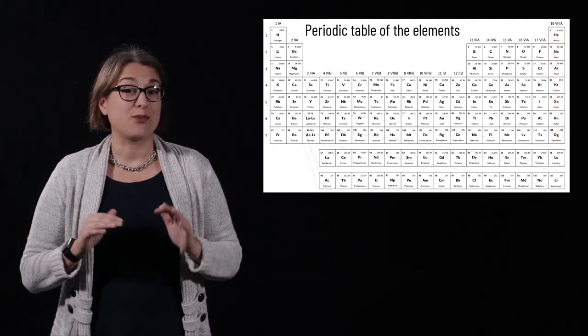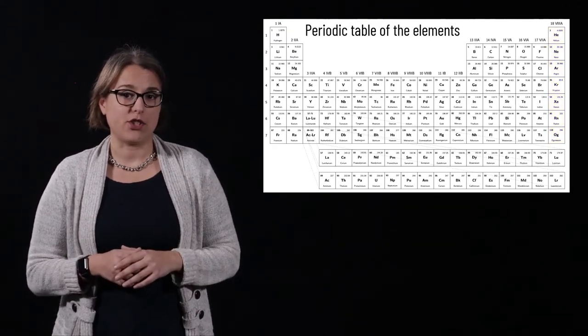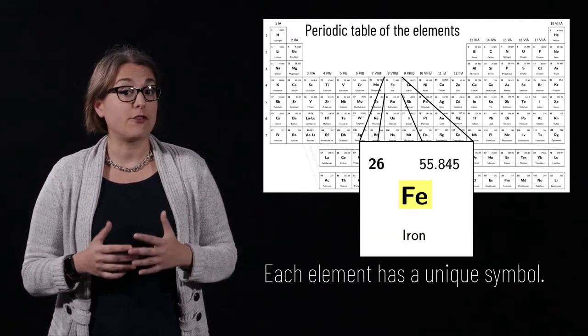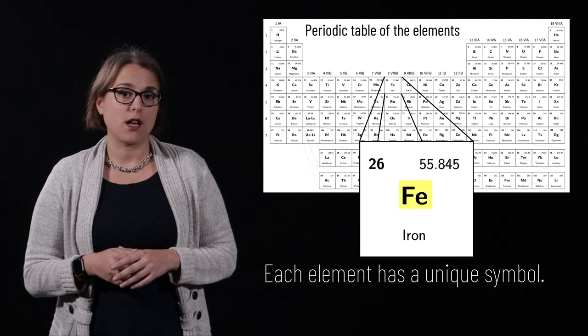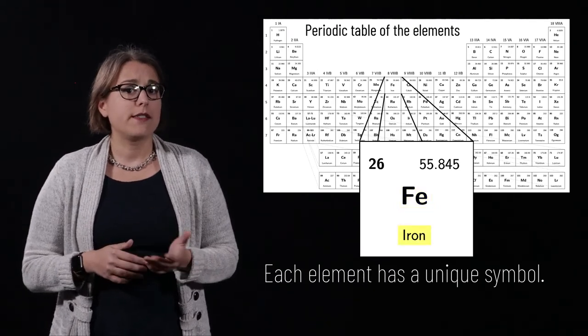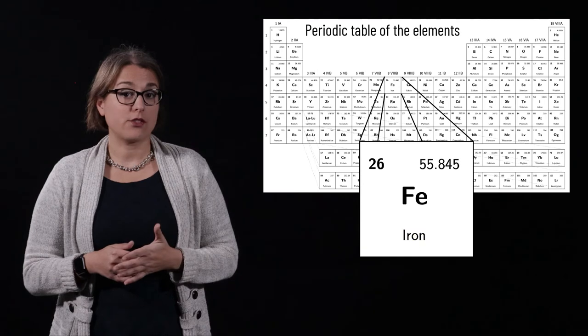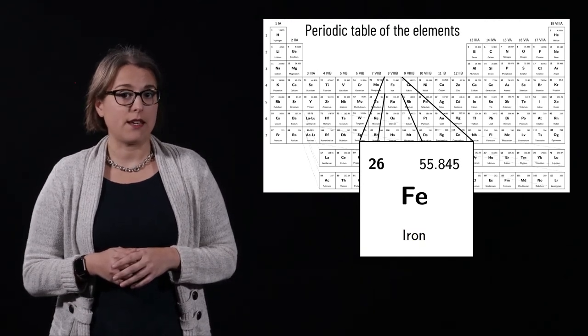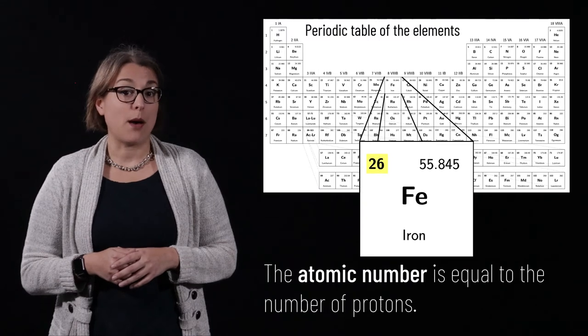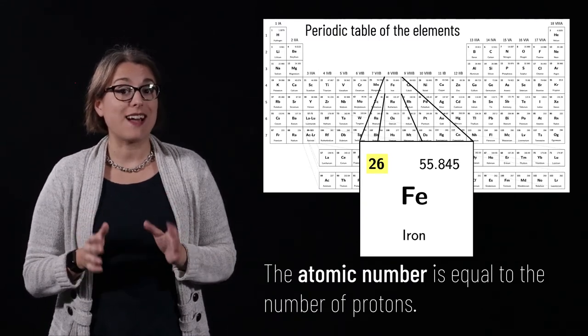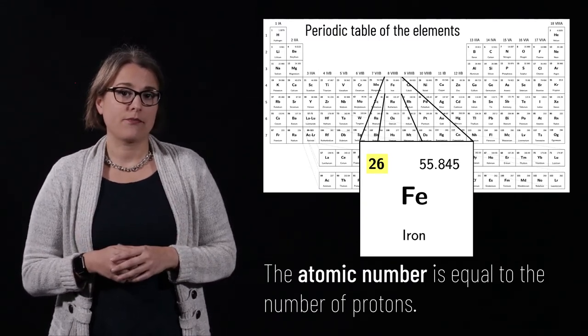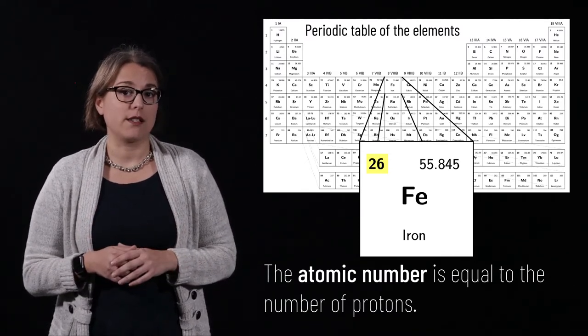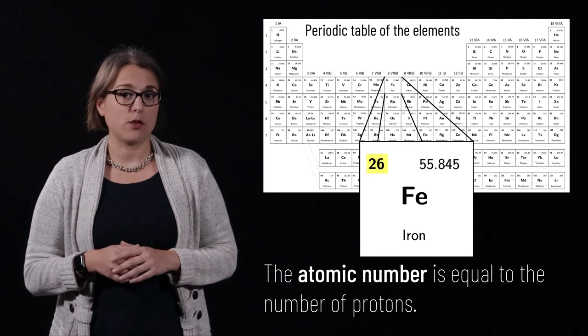The periodic table provides us with a lot of information about each element. Inside each box is a symbol that is used to define the element in a chemical formula. Frequently, the name of the element will be spelled out as well. Oxygen has the symbol O. Lead has the symbol Pb. The number at the top of each box tells us the atomic number of each element. The atomic number uniquely defines the element, and is equal to the number of protons inside each atom's atomic nucleus.